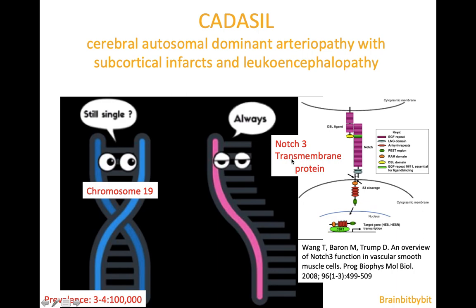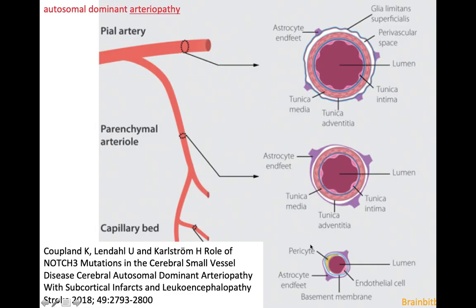The NOTCH family are transmembrane proteins taking care of the communication between cells. NOTCH3 is among others expressed in vascular smooth muscle cells, leading to the arteriopathy, to the subcortical infarcts, and the leukoencephalopathy. There's mainly cerebral involvement in CADASIL, although NOTCH3 is expressed in all tissues, because there's not only a problem with the vascular smooth muscle cells but also a problem with the blood-brain barrier and the pericytes that also express NOTCH3.